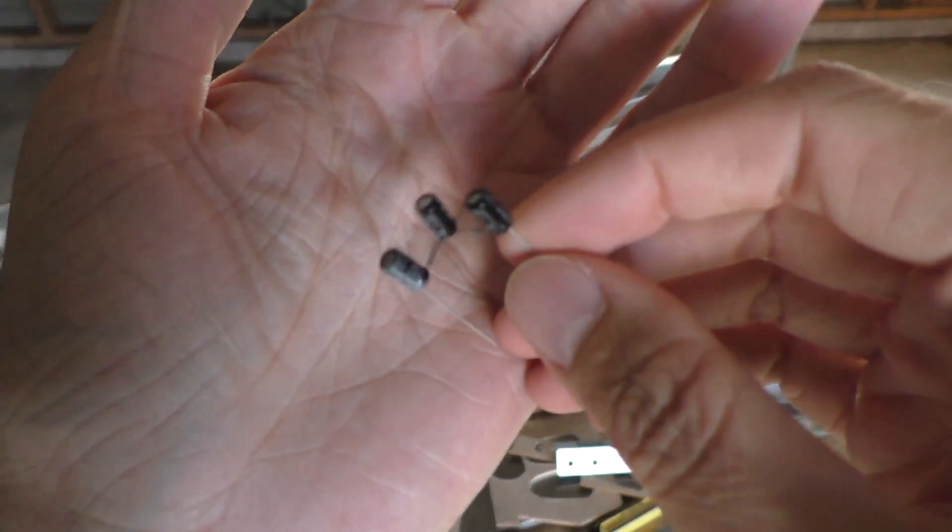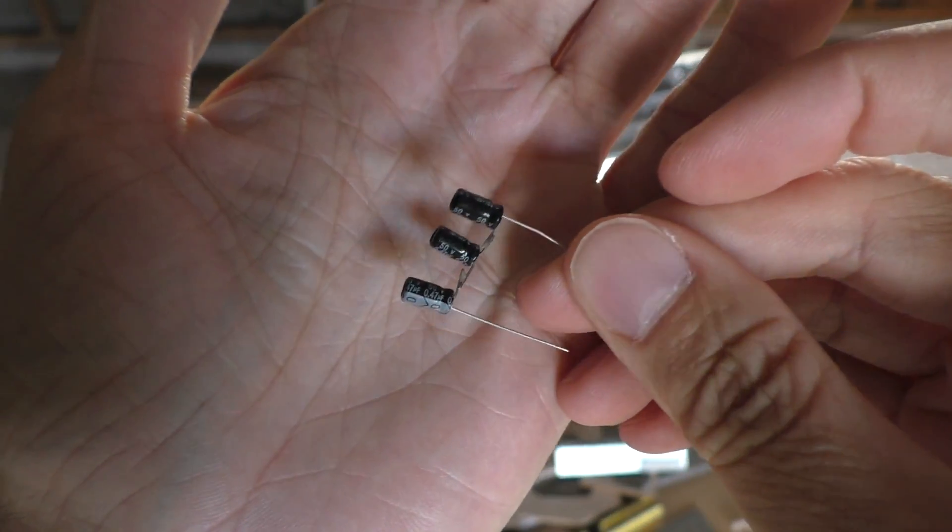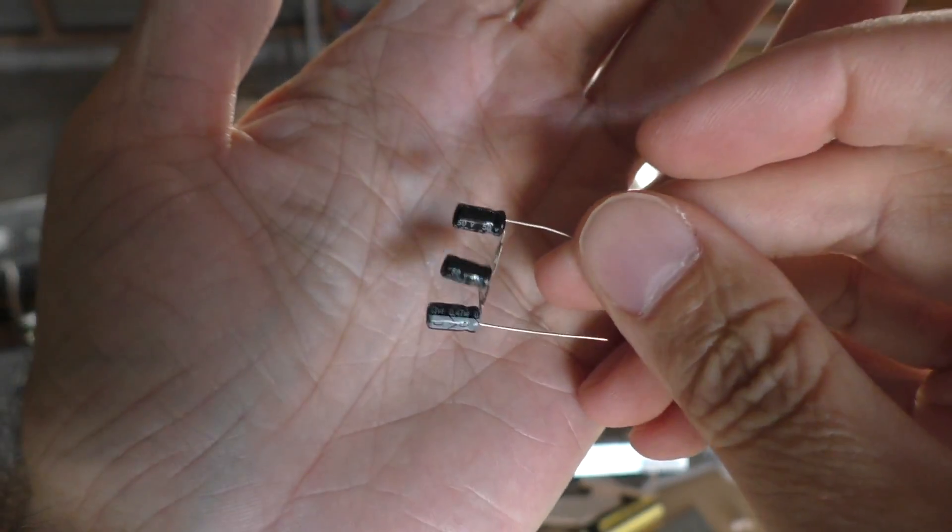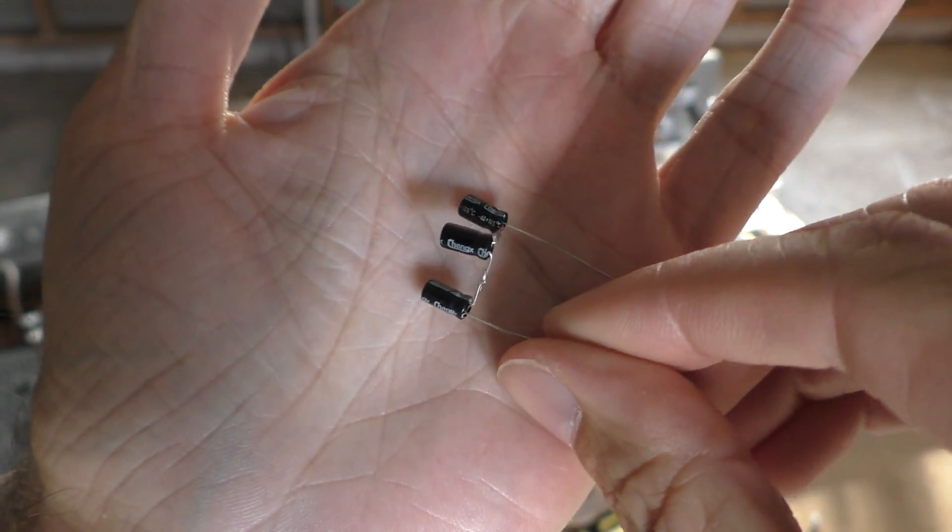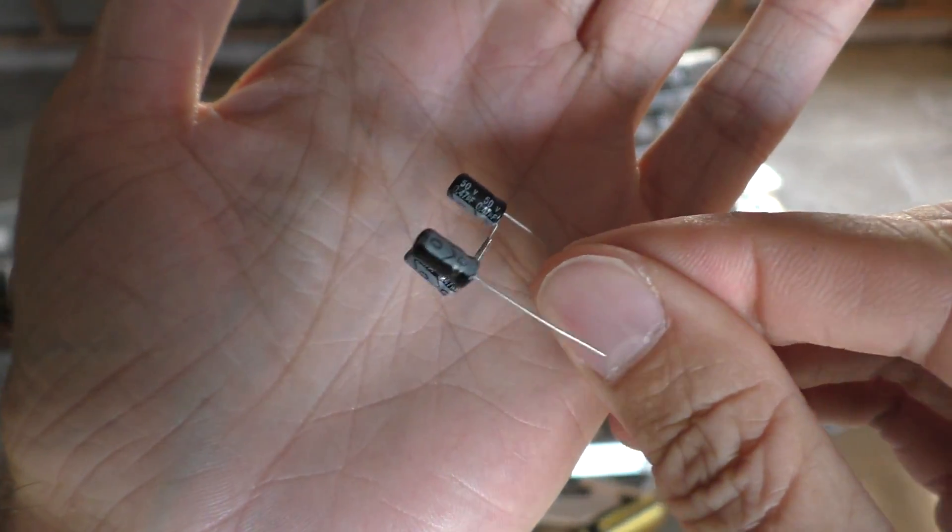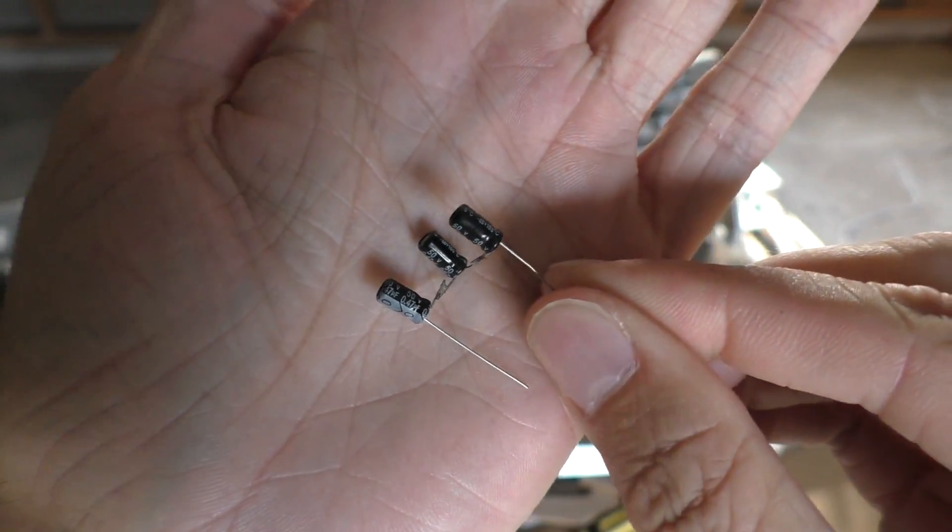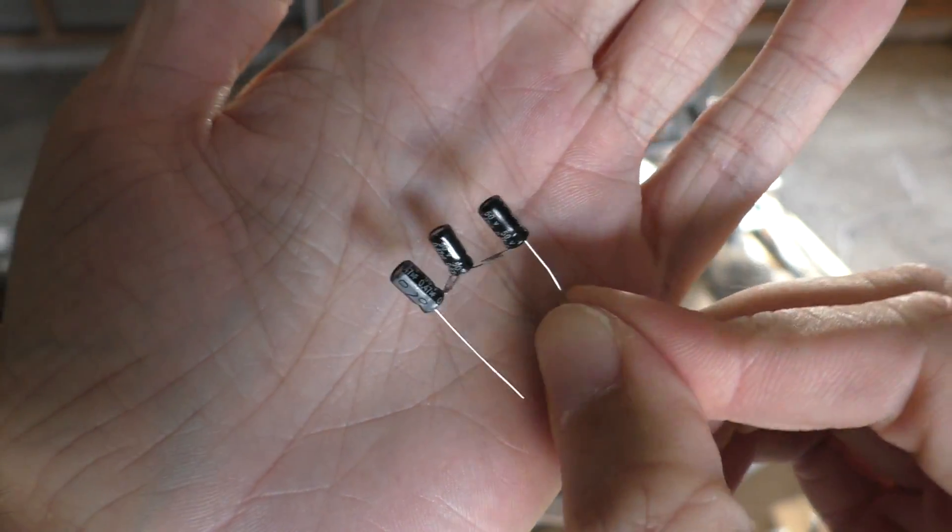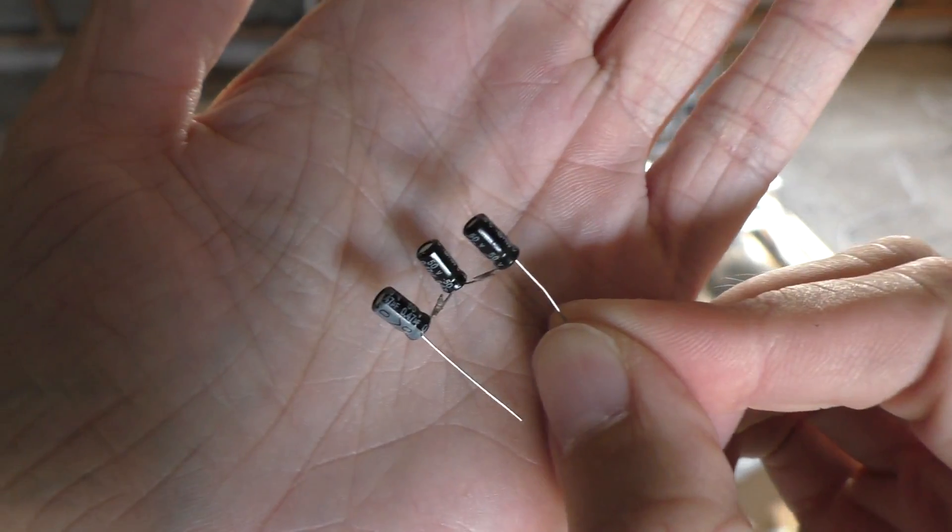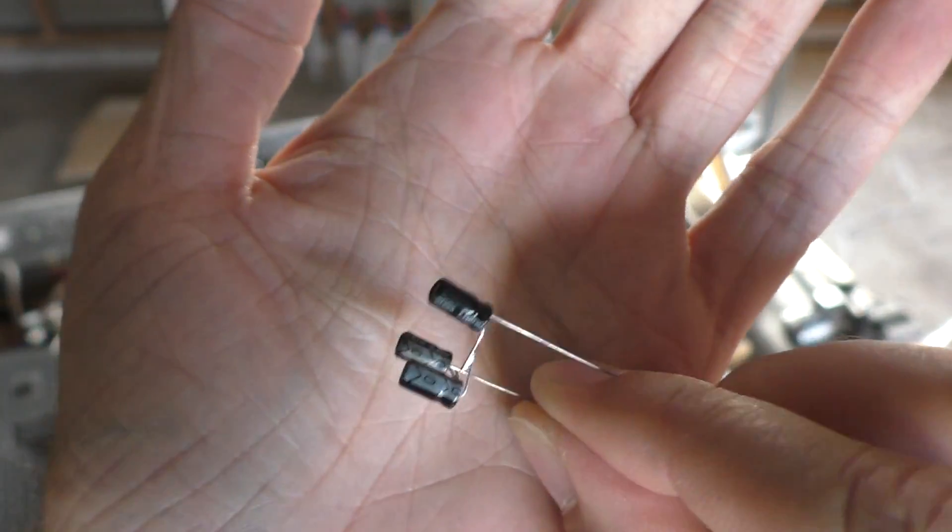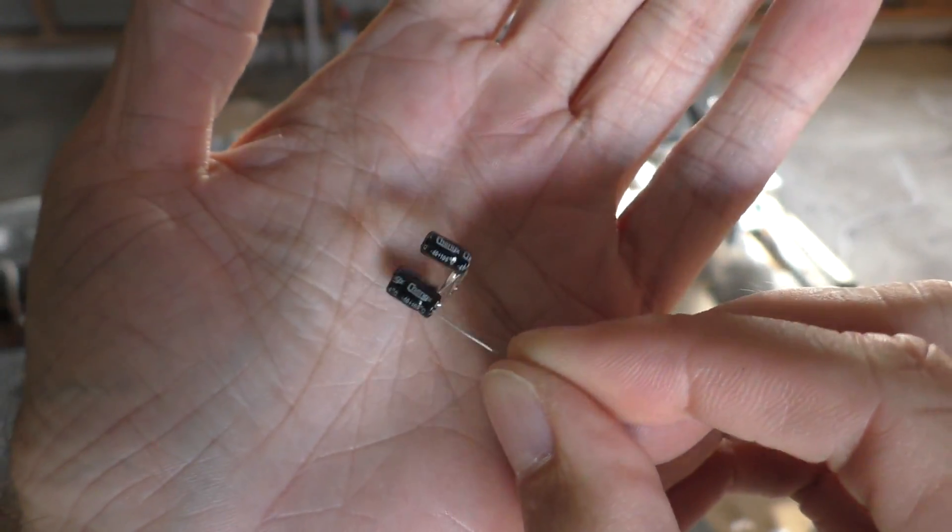I'm going to try putting some small capacitors across the motor terminals to see if that will reduce the noise a little bit. These ones are 0.47 microfarads, and I've put them in series. They're 50 volts, so that should be able to handle 150 volts like that, and the capacitance will be about 0.16 microfarads.